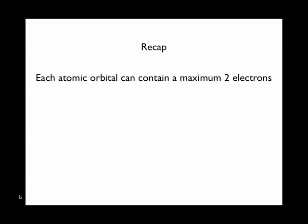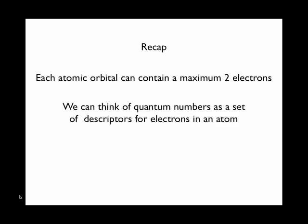So to recap, each atomic orbital can contain a maximum of two electrons and we can think of a set of quantum numbers as descriptors for electrons in an atom. And in fact, each electron in an atom has a unique set of quantum numbers.